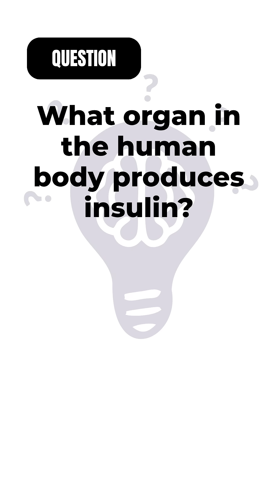What organ in the human body produces insulin? The pancreas produces insulin, which helps regulate blood sugar levels.